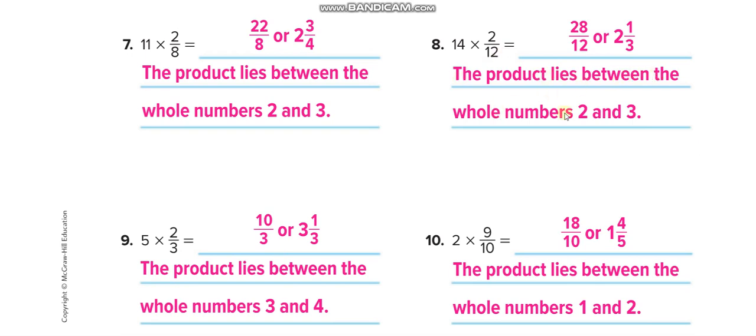Okay, next one guys, here independent practice. Solve it by yourself and then match your answers through this video. The product lies between the whole number 2 and 3. This one, this product. 2 whole and the next number is 3, so in between 2 and 3. Here 1, the next number is 2, so 1 and 2. 3, next number is 4, so between 3 and 4.